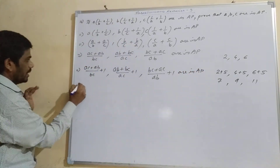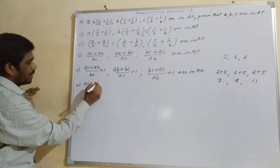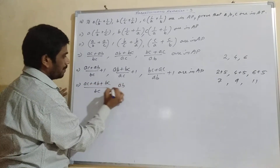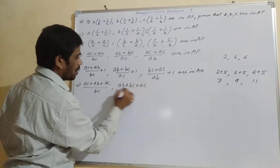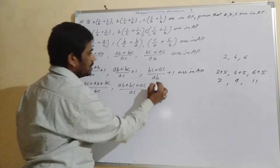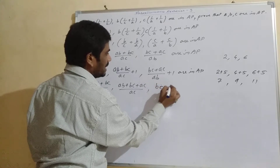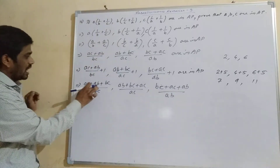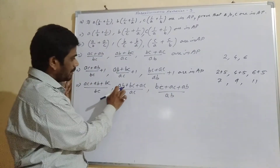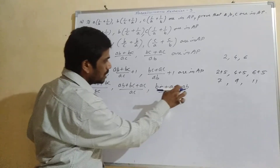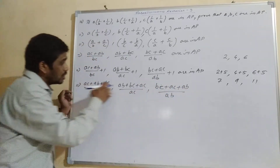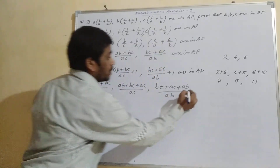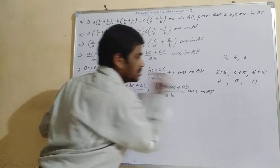So it will be (AC + AB + BC)/BC, here (AB + BC + AC)/AC, and here (BC + AC + AB)/AB. As we can see, AB + BC + AC appears as the numerator in all three terms — meaning everywhere the numerators are equal. So these are also in AP.